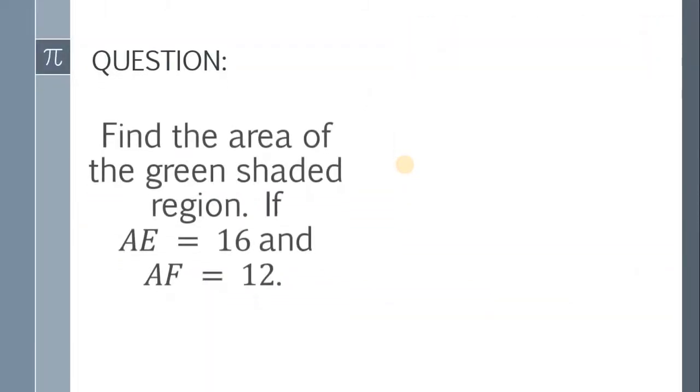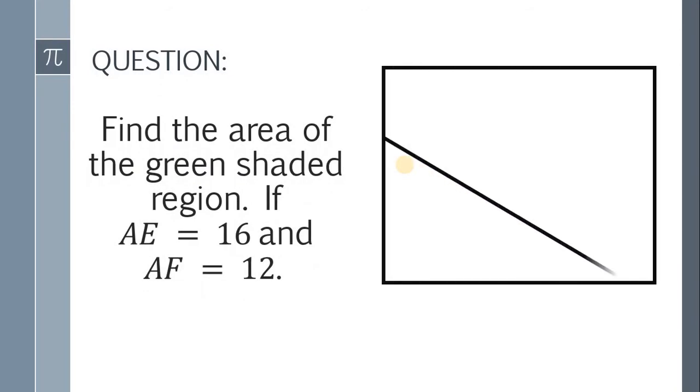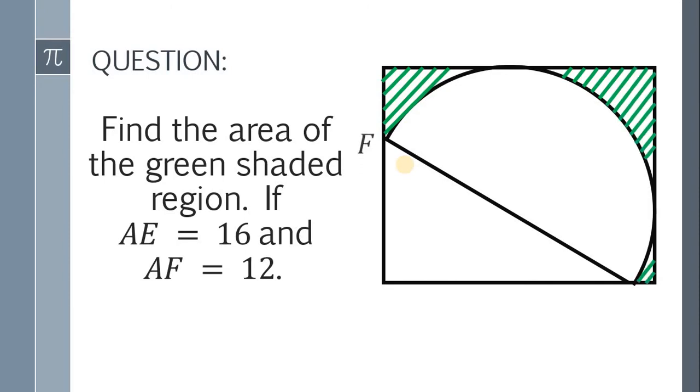Here's the question: Find the area of the green shaded region if AE is equal to 16 and AF is equal to 12 units.